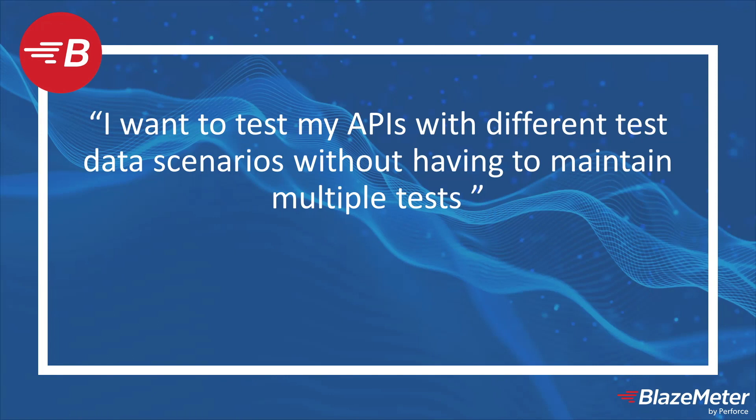Typically, we want to create API tests and vary the test data that we will use for the test. This lets us test boundary and edge conditions as well as performing both positive and negative tests. However, creating multiple API tests just to change the data is a maintenance headache.